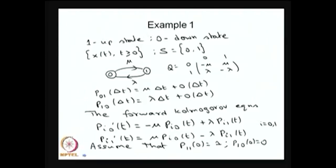Before I go to the limiting distribution, let me give an example for the continuous time Markov chain to get the time-dependent solution. This example is the very simplest — a two-state continuous time Markov chain, and the default one is time-homogenous. The state space consists of states 1 and 0, where 1 can be considered as the up state or operational state and 0 is the down state or non-operational state. This can be visualized for any model in which the whole dynamics can be described with two states and the Markov property is satisfied.